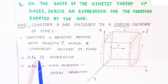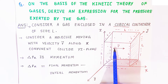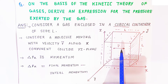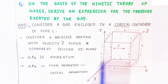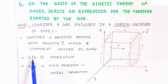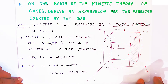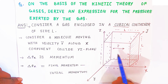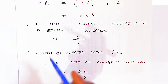Now delta px is the momentum. If any particle is moving, it should have some momentum. This particle has a change in momentum. Delta px is along the x-axis — it is the change in momentum. Delta px is calculated as final momentum minus initial momentum. So now we are going to find out the momentum along the x-axis.